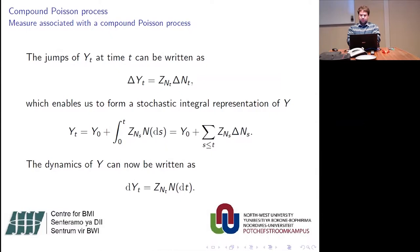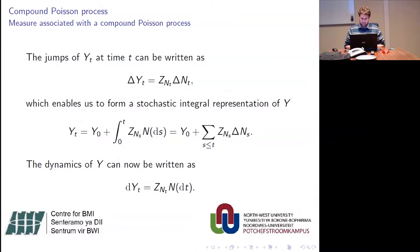The jumps of the compound Poisson process can be written such that if a jump occurs, the jump equals the random variable Z_{N_T}. There are two ways to represent this compound Poisson process: one is a stochastic integral representation, which is the classic way, but we decided to rather use the dynamics of the compound Poisson process, so dY_T equals Z_{N_T} times the counting measure.